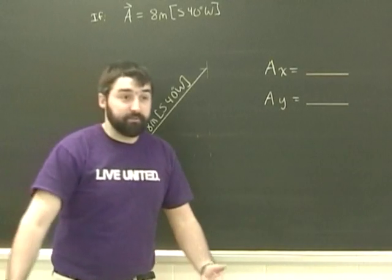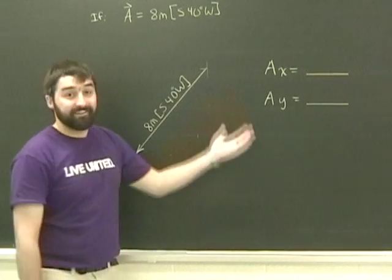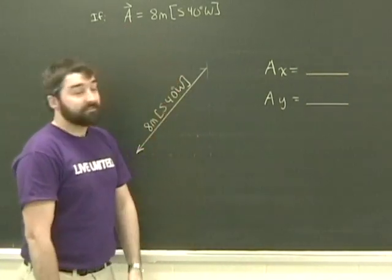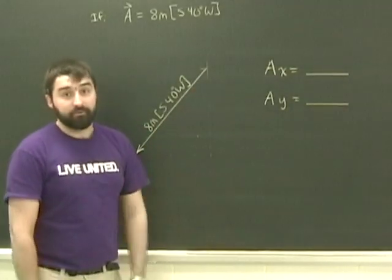So welcome to Finding Components Part B. This time we're using a slightly different example. If our vector now, A, is 8 meters south 40 degrees west, what are the x and y components of it?